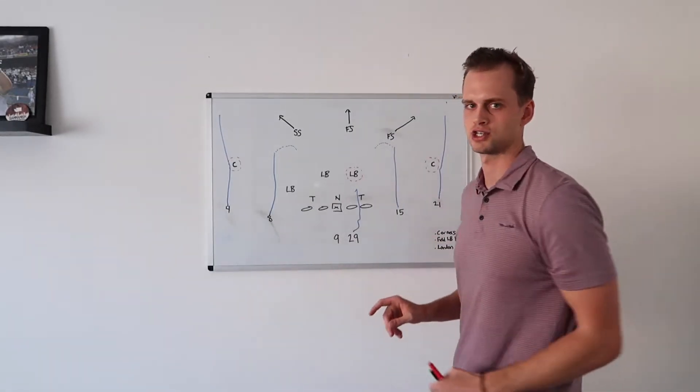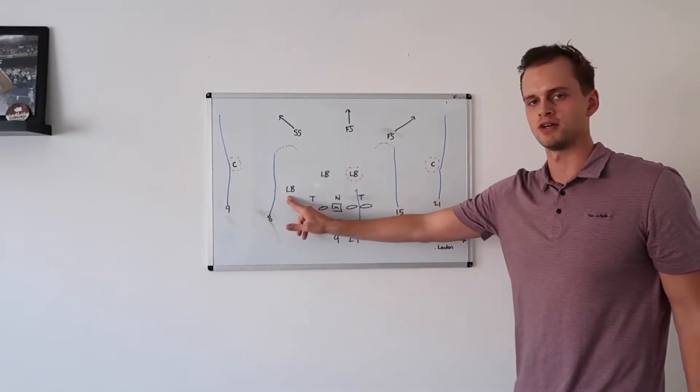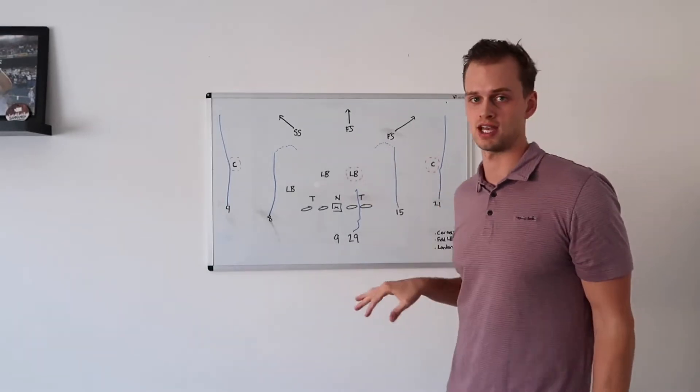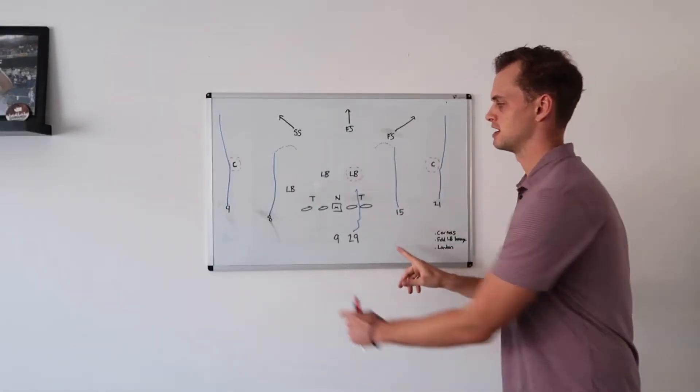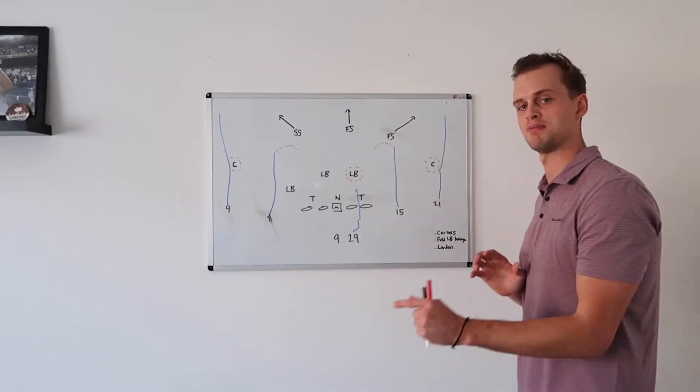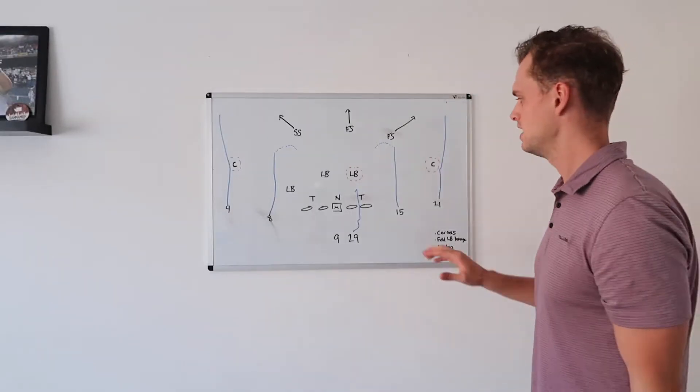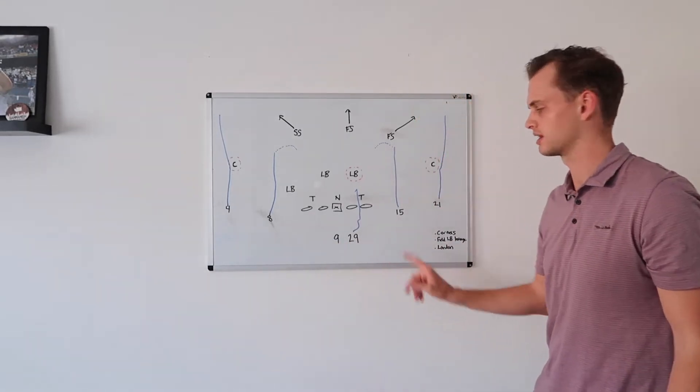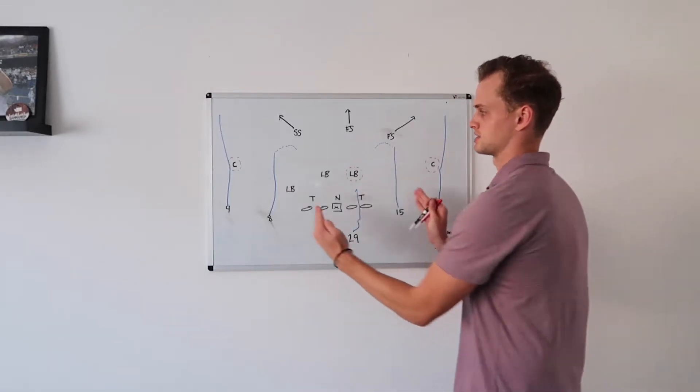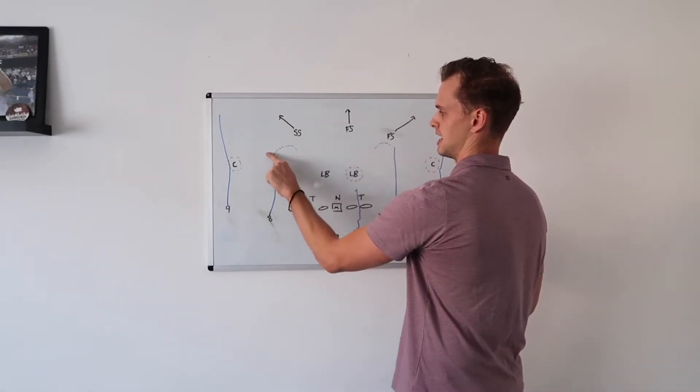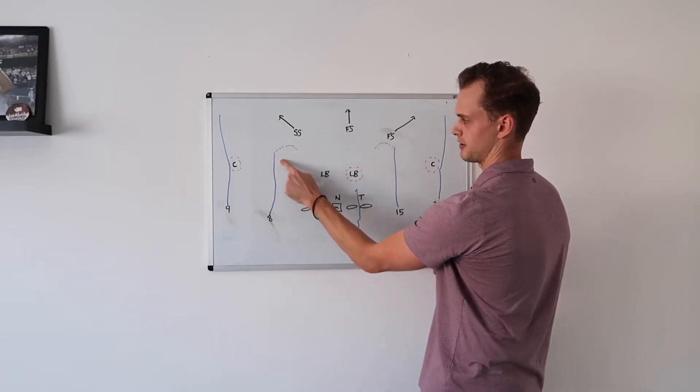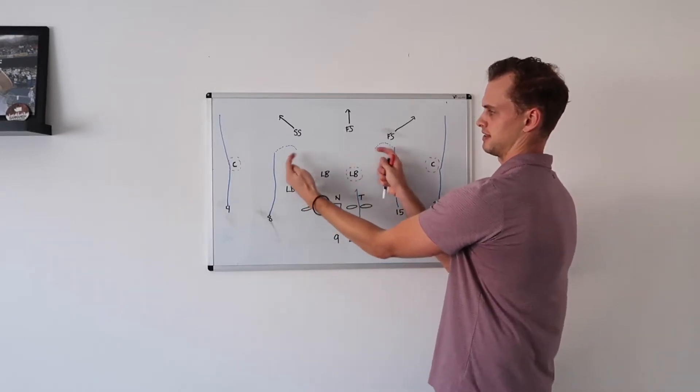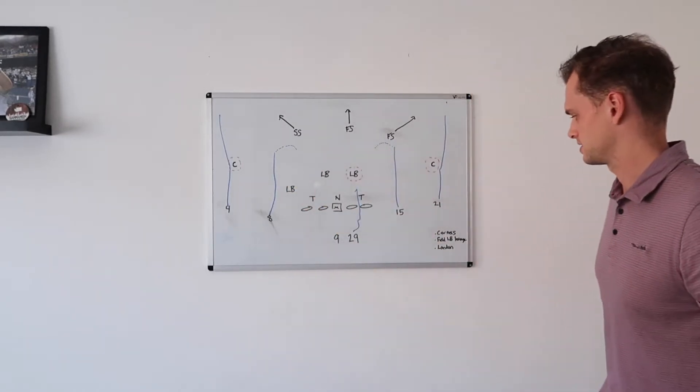Graham elects to call a four verticals concept. Amon Ra St. Brown in the slot here kind of does a dig route action, but it's a four verts concept. These two inside guys are reading the leverage of these linebackers and the leverage of the safeties. There's a lot of freedom in these routes, and with the experience that both Amon Ra and Drake London have, they can stay vertical, they can bend and take the middle, or they break their routes in and find success that way.